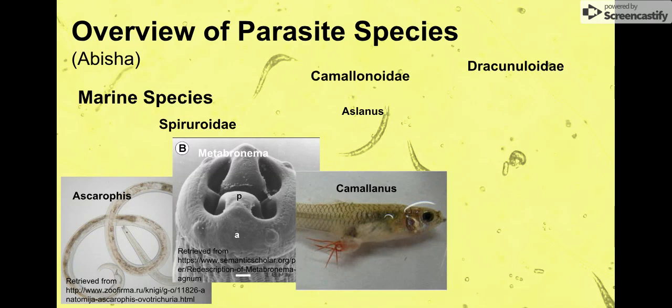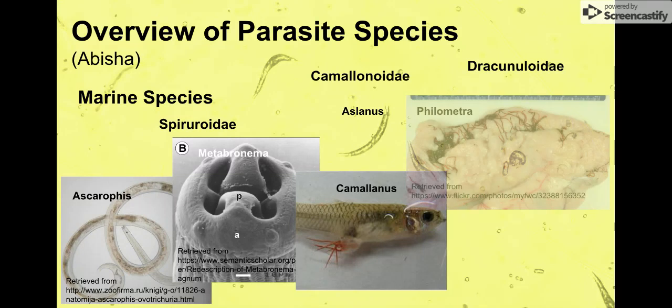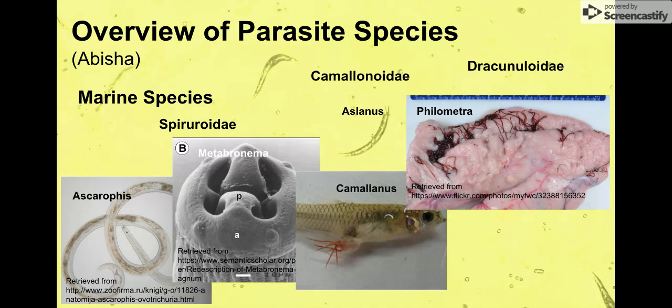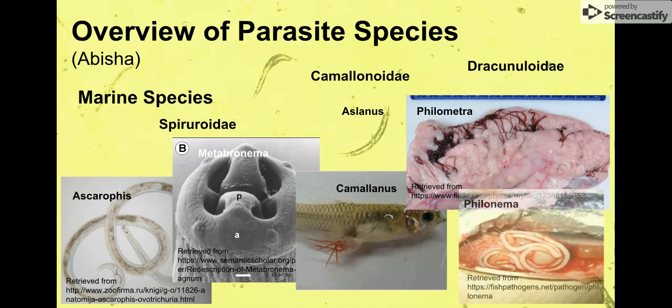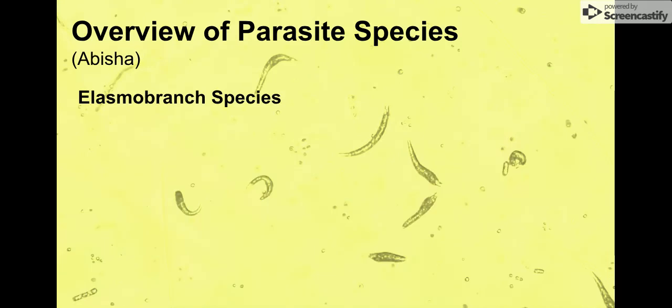The last group is Dracunculidae, which includes Philometra — those little red worms on this gonad organ here — and Philonema. So Philometra and Philonema are the two species in that group.